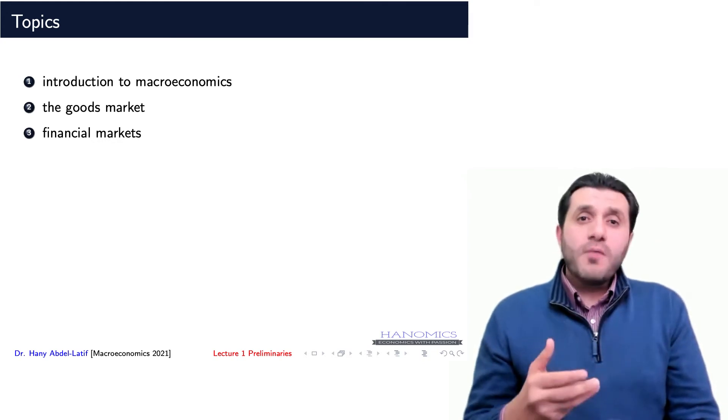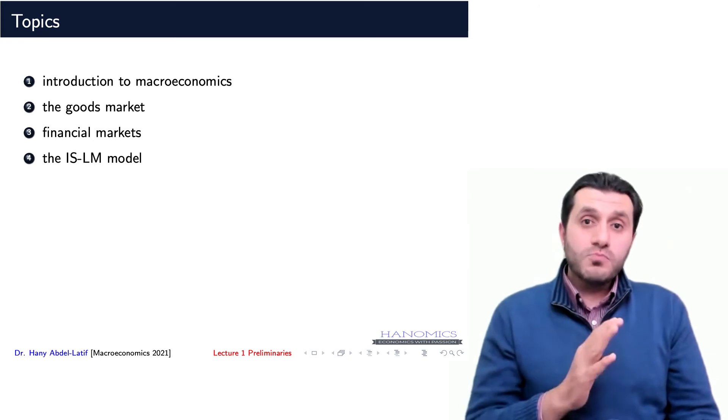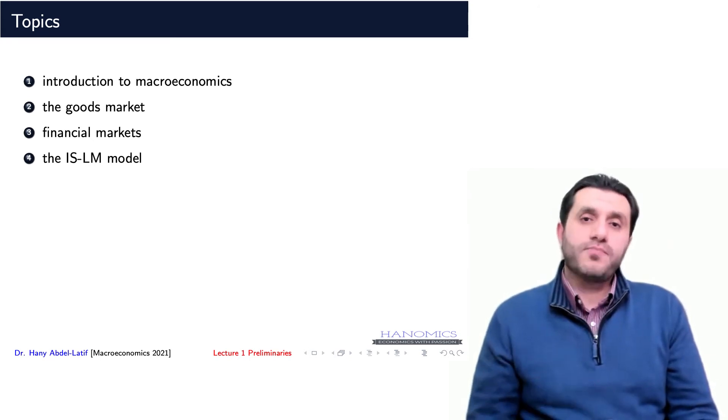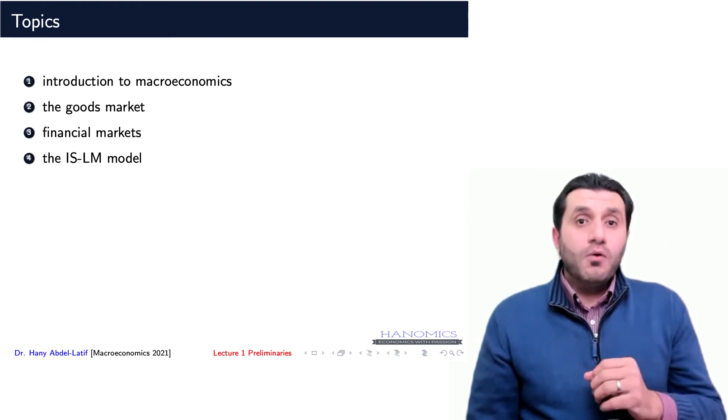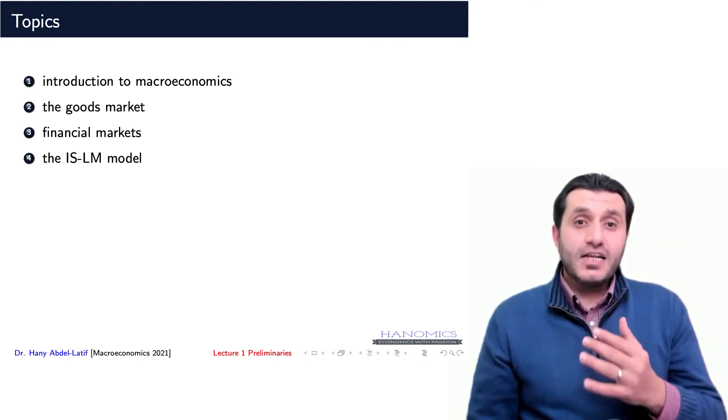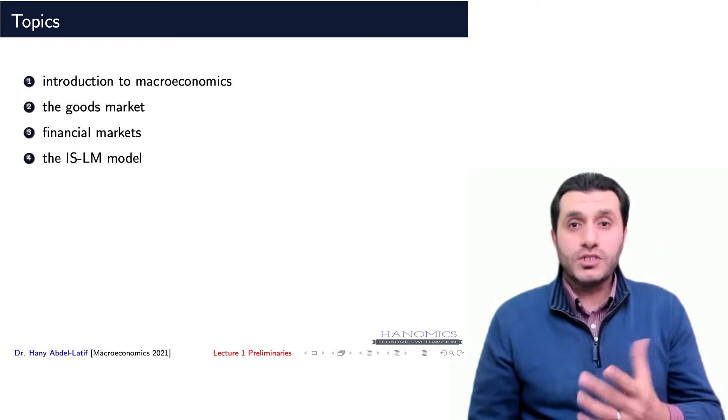The next topic will cover simultaneous equilibrium in both the goods market and financial market. We will use the Keynesian IS-LM model, which is an excellent analytical tool that helps us understand both markets' equilibrium conditions.